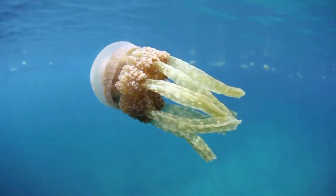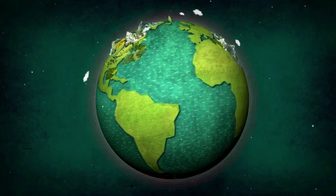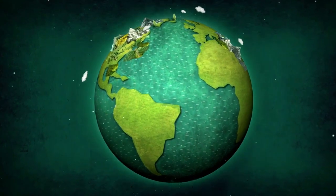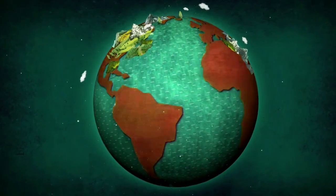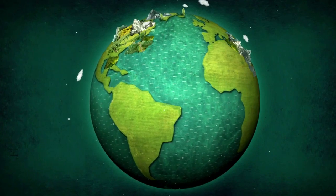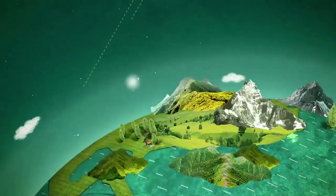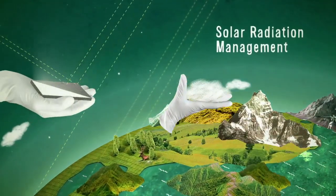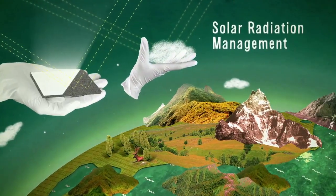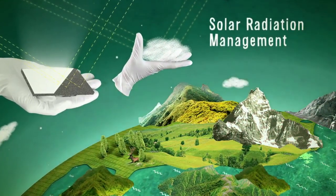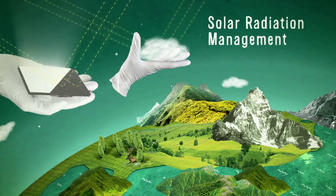Geoengineering is a term that covers large-scale targeted interventions in the Earth's atmosphere, the oceans and the biosphere. There are two basic directions that potential manipulation of the climate could take. Solar radiation management involves activities that reflect the sun's rays back into space, so that the climate heats up less.